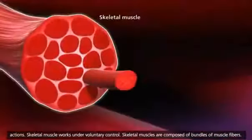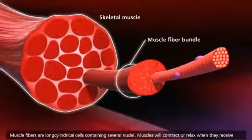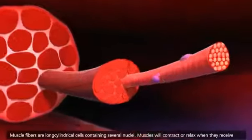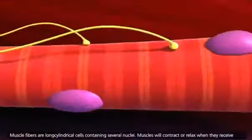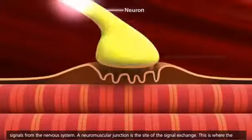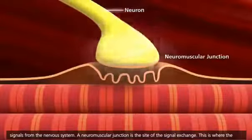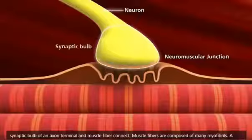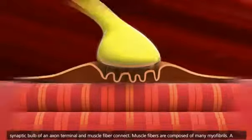Skeletal muscles are composed of bundles of muscle fibers. Muscle fibers are long cylindrical cells containing several nuclei. Muscles will contract or relax when they receive signals from the nervous system. A neuromuscular junction is the site of the signal exchange — this is where the synaptic bulb of an axon terminal and muscle fiber connect.